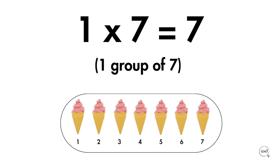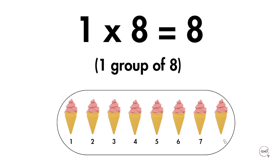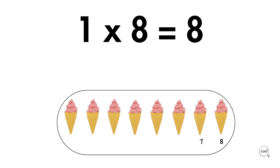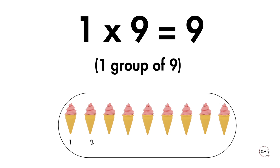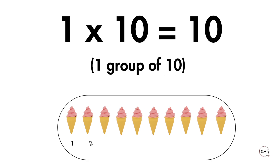1 group of 7 is 7. 1 group of 8 is 8. 1 group of 9 is 9. 1 group of 10 is 10.